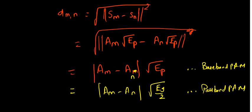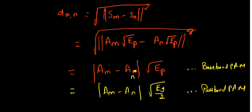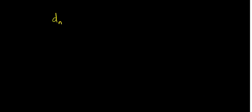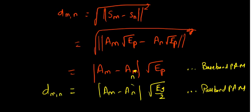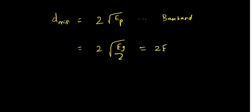To find the minimum distance, from the signal space plot we can see the minimum value of |A_m − A_n| between adjacent symbols is 2. So d_min = 2√E_p for baseband, and d_min = 2√(E_g/2) = √(2E_g) for passband.